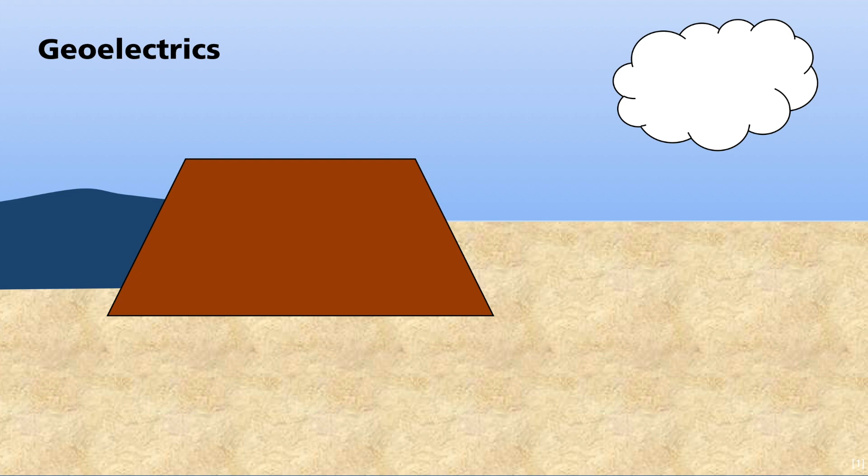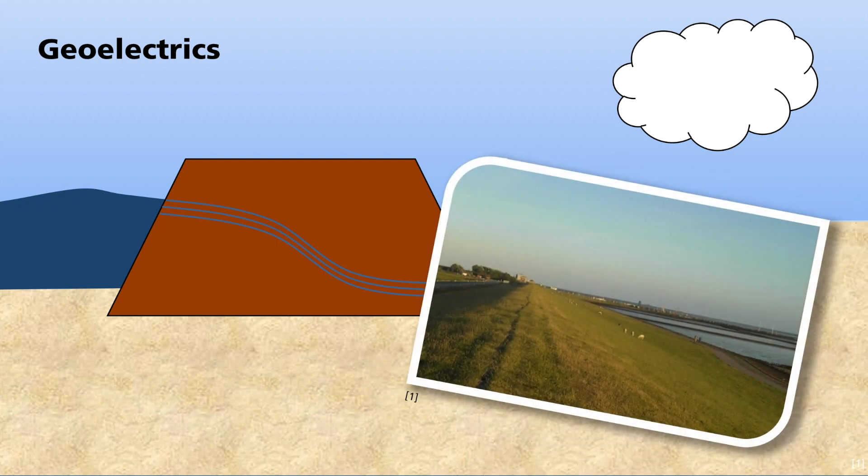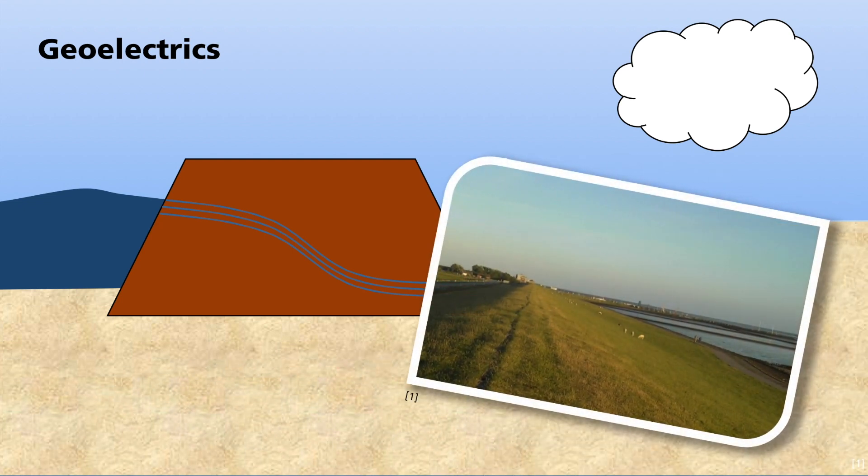Regular checks of the water content and the body of the dike are therefore necessary to ensure its stability. Such analyses can be carried out using geophysical techniques. Geoelectric measurements are particularly suitable for this. Using them, differences in the electrical conductivity and thereby also in the water saturation inside the dike can be measured without damaging it. Water increases the conductivity because it contains free ions which increase the flow of electric current.